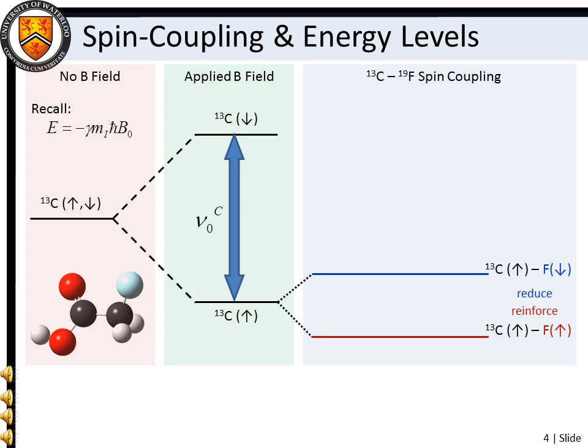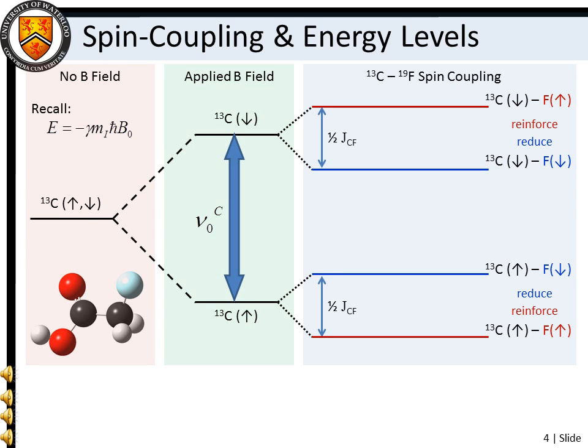For the original carbon-13 spin-down state, the exact opposite is true. An adjacent fluorine spin-up nucleus raises the carbon-13 spin-down state energy, whereas an adjacent spin-down fluorine nucleus lowers this spin state's energy. Notice however, that the spin coupling for both of the original carbon spin states is identical.